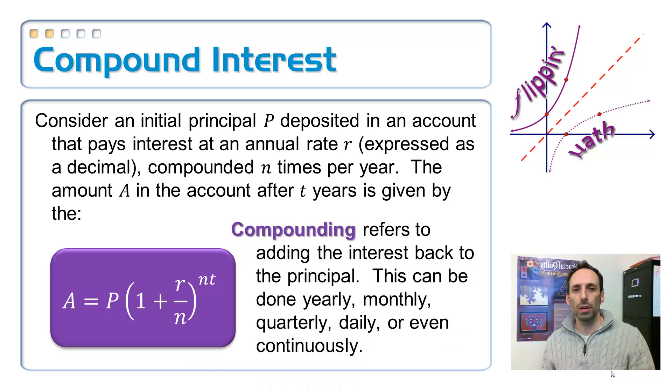N is the number of times that you compound it. And so banks usually compound it. They could compound it once a year. They could compound it twice a year, maybe four times a year if it's quarterly, every month, every day, something like that. Or even, look down at the bottom, continuously. So this is like an exponential growth equation, because 1 plus R over N is going to be a number that's bigger than 1. So it'll be just like the equations that we looked at before with exponential growth.